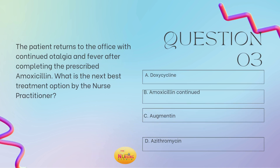And then lastly, question number three for today: the patient returns to the office with complaints of continued otalgia and fever after completing the prescribed amoxicillin. What is the next best treatment option by the nurse practitioner? Is it A, doxycycline; B, continue with amoxicillin; C, augmentin; or D, azithromycin? Take a moment and tell me what you got.